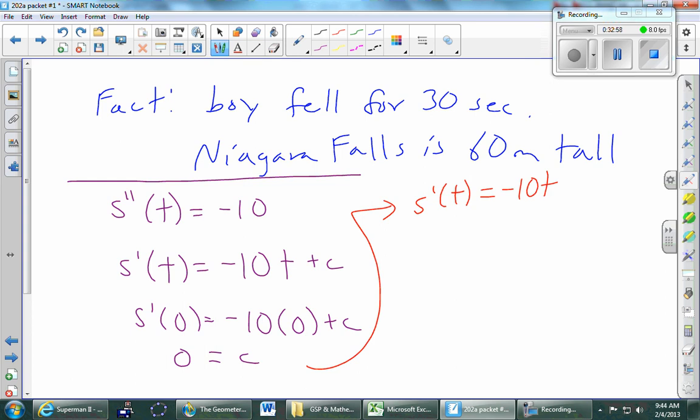So we'll come over to here, and just rewrite s prime of t is now just negative 10 t, because the plus c is nothing. Take another anti-derivative of both sides. s prime, what does it become when you anti-differentiate? It just becomes plain old s. Anti-derivative of negative 10 t is negative 10 t squared over 2. We'll fix that and make it a 5 in a moment. We'll just add 1 to the power, divide by the new power, plus some constant. I'm just going to define zero to be the position when this kid fell, when he started falling. You could perfectly well define the bottom of the falls to be zero, but we'll just call zero where he started. So that means that if I plug zero in for the t, then I get zero as an answer. So how much is the c? Zero, his initial position.